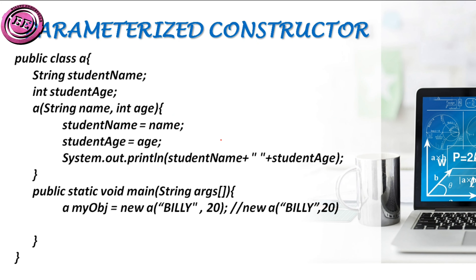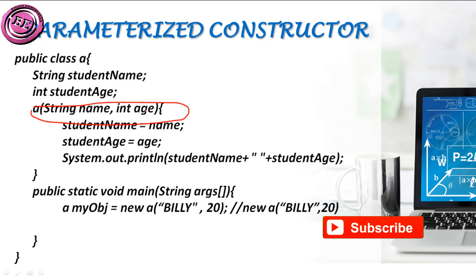Coming to the third one — what is a parameterized constructor? A constructor in which we give some particular parameters to the variables is known as a parameterized constructor. In this particular constructor we are giving some parameters. Here, the string 'name' and the int 'h' represent some parameters. The constructor in which we give parameters is known as a parameterized constructor.